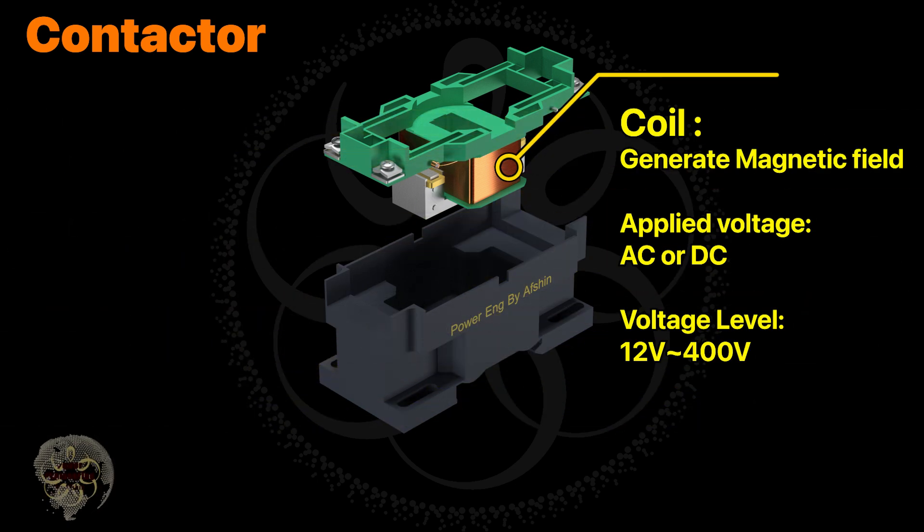When current flows through the wire it generates a magnetic field. The voltage applied to the coil can be either AC or DC and is available in various levels depending on the contactor's design.